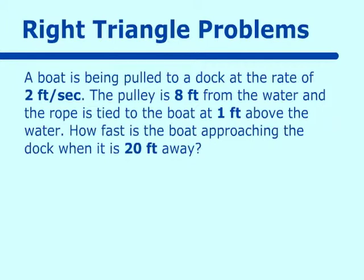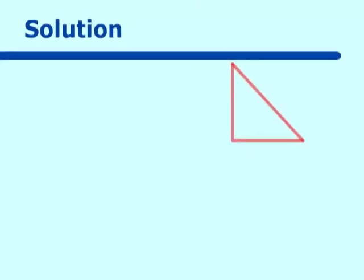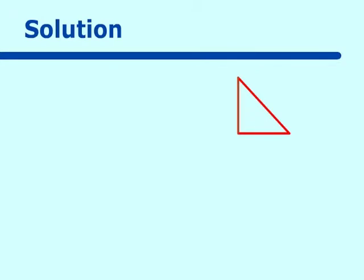We have a little animation on this. The solution to this right triangle type of problem is to first draw a right triangle. We know that the vertical distance from the rope attachment point to the pulley is seven feet. We don't know the distance from the boat to the pier, and we don't know how far the rope is out, so we call the first distance x and the second distance z. Using the Pythagorean theorem: x² + 7² = z².